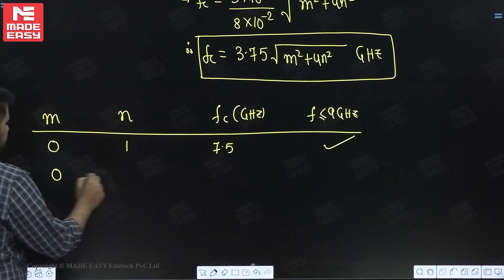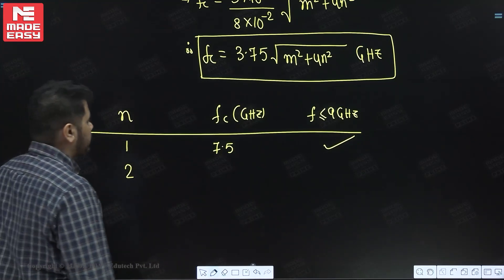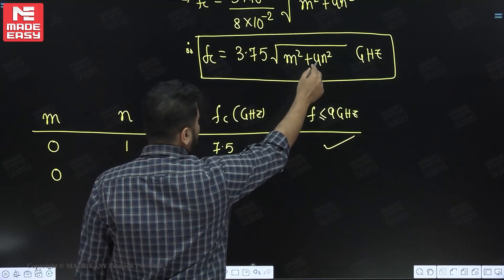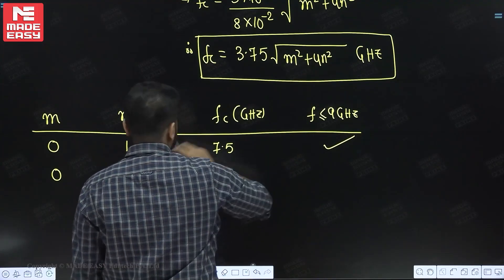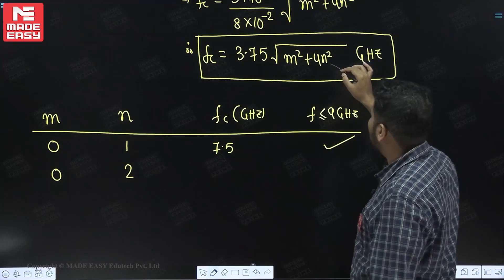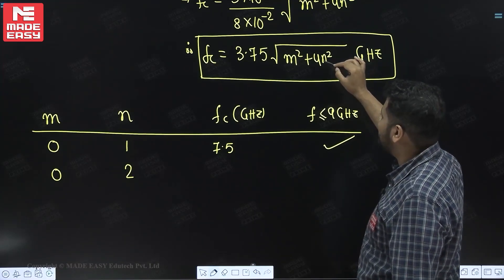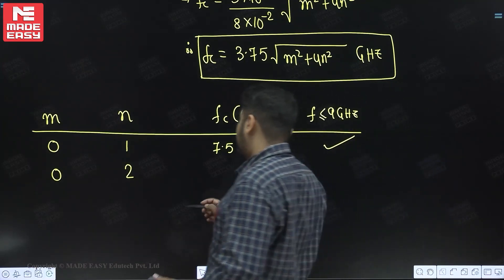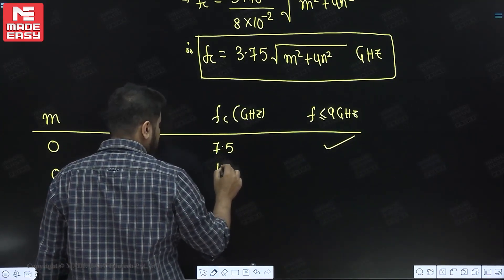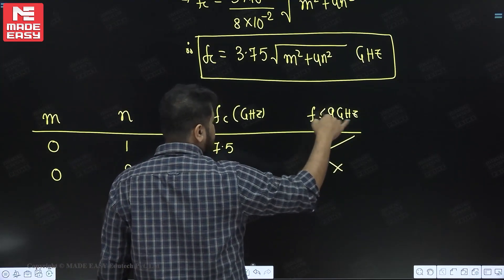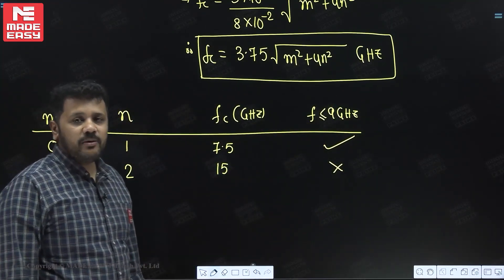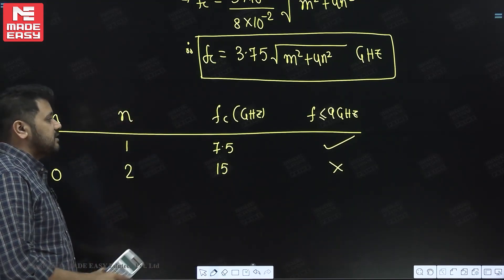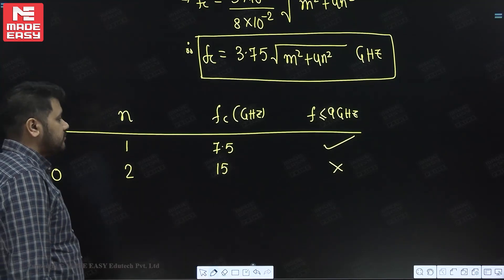For m=0, n=2: FC = 3.75 times root of 16 = 3.75 times 4 = 15 gigahertz. Since 15 GHz is greater than 9 GHz, mode (0,2) is not allowed.